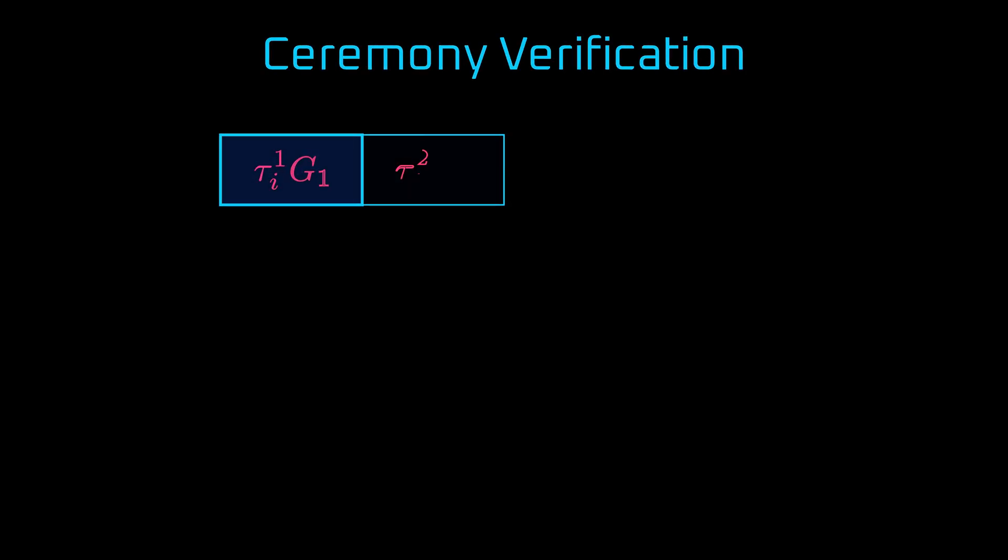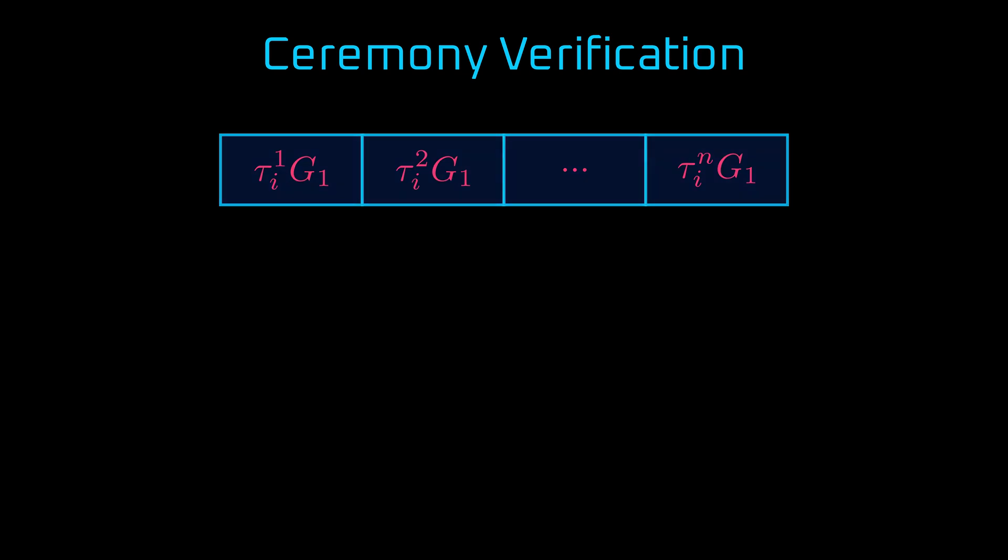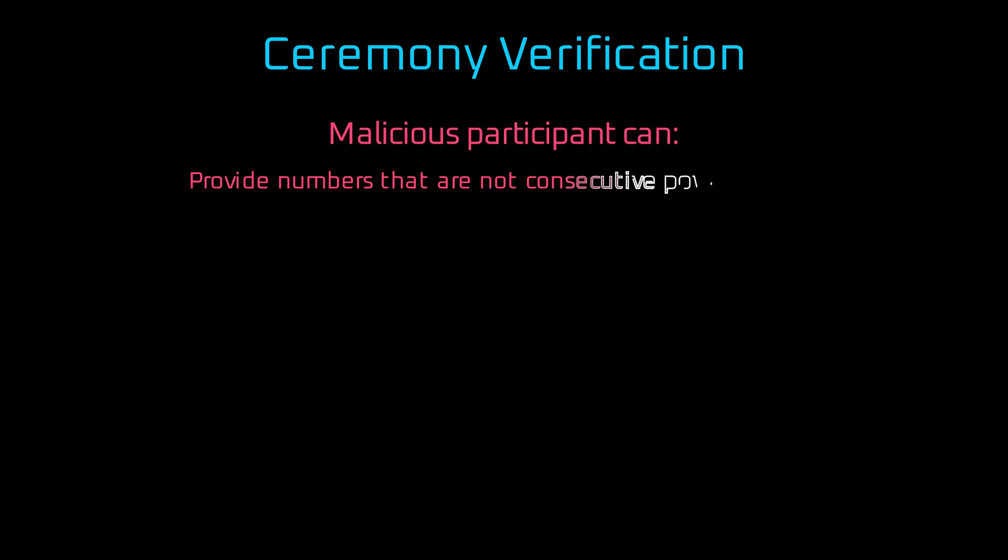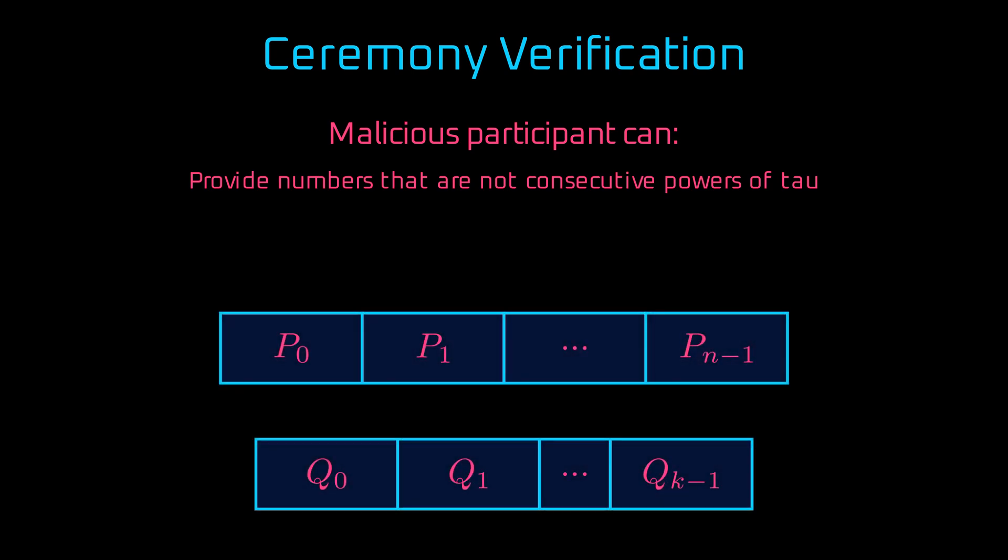During the ceremony, each participant generates numbers that are supposed to be consecutive powers of tau. However, a malicious participant can provide numbers that are not consecutive powers of tau. To understand this, let's look at the setup. We have two sequences of points, P0 up to Pn-1 and Q0 up to Qk-1. To detect malicious behavior, we use pairings. We construct an operation on two points of the setup and use the bilinearity property of the pairings with which we can move tau to the exponent and to the other argument. So we decompose P-i and Q-i and, thanks to pairings operations, as if magically, we can see if the points are actually correctly calculated. By checking the pairings of the parameters at different indexes, we can confirm that they align correctly with the expected sequence. This method allows us to validate the sequence incrementally and catch any deviations introduced by a malicious participant.